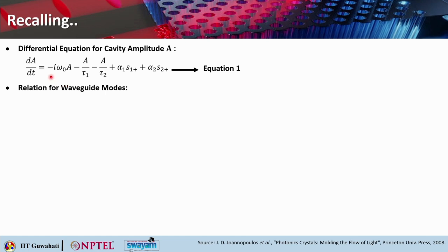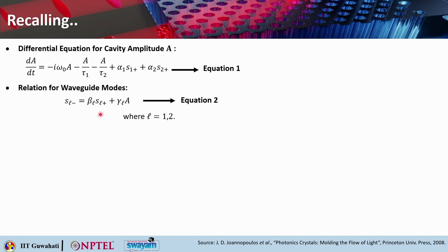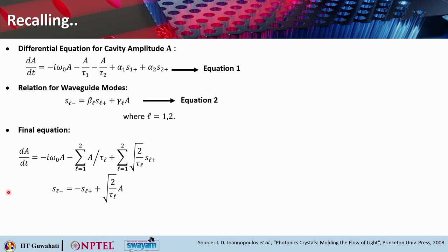The first equation was the differential equation for cavity amplitude A: dA/dt equals minus i·ω₀·A, minus A/τ₁, minus A/τ₂, plus α₁·S₁₊ plus α₂·S₂₊ — that was equation 1. We have already seen the relation for waveguide modes — how the outgoing and incoming waves are related. S_l⁻ was given as β_l·S_l⁺ plus γ_l·A, where l represents 1 or 2, indicating waveguide 1 or waveguide 2. And equation 3 was: dA/dt equals minus i·ω₀·A minus the summation over l=1 to 2 of A/τ_l, plus the summation over l=1 to 2 of √(2/τ_l)·S_l₊.